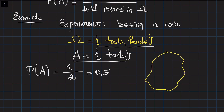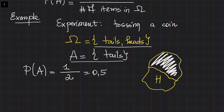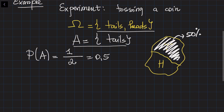So graphically, this is our sample space split into two parts: tails and heads. Defining the probability of getting tails is basically finding the proportion of this part out of the whole sample space. This is half of the whole set — 50% of the whole area — so the event is going to happen with probability 50%.